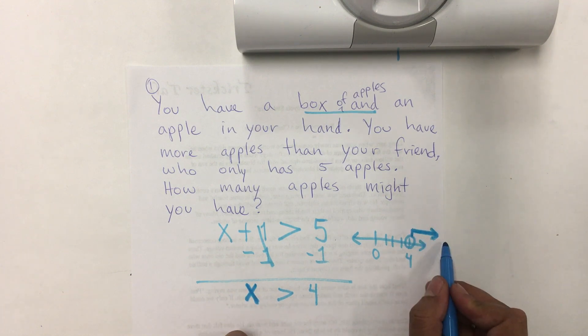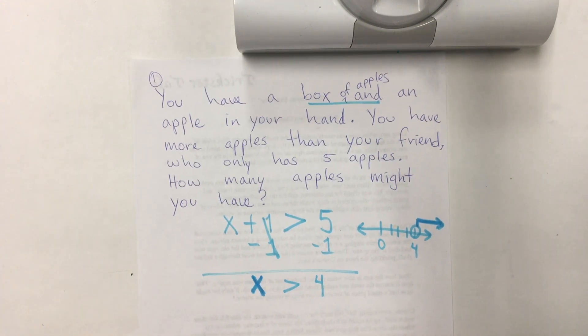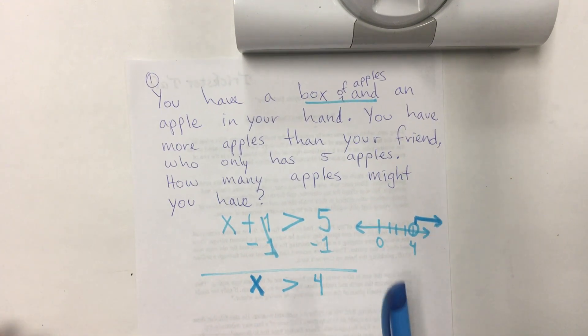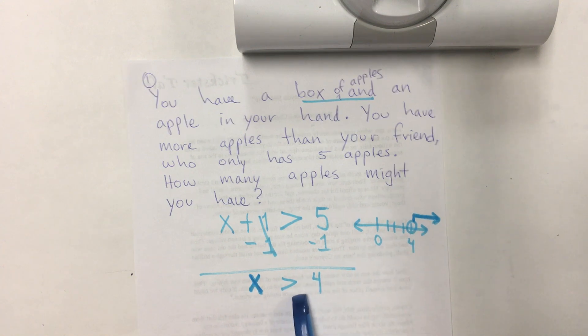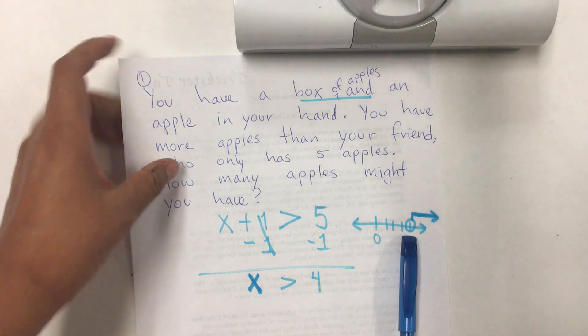So, the greater numbers are to the right. Again, we don't have an equal sign in here. That's why the circle is open.